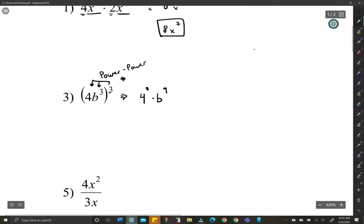Now 4 to the third, that's not 4 times 3. Use your calculator to do 4 carat 3. And that's going to be 64 b to the ninth.